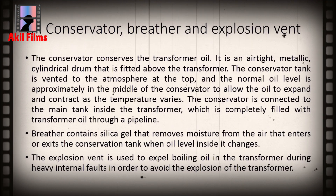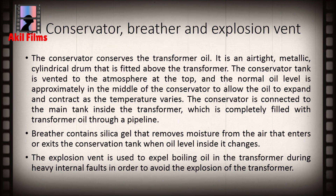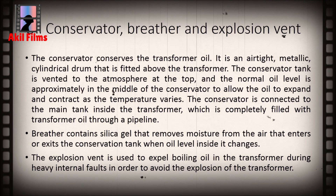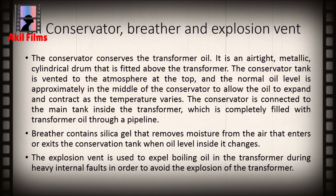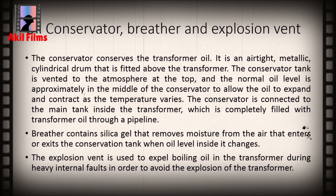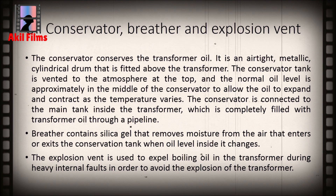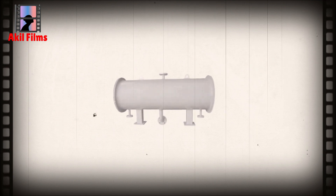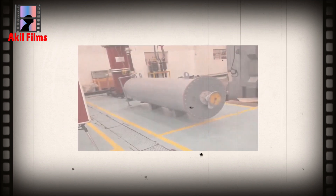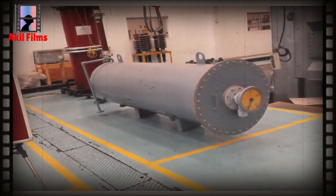The conservator conserves the transformer oil. It is an airtight, metallic, cylindrical drum that is fitted above the transformer. The conservator tank is vented to the atmosphere at the top, and the normal oil level is approximately in the middle of the conservator to allow the oil to expand and contract as the temperature varies. The conservator is connected to the main tank inside the transformer, which is completely filled with transformer oil through a pipeline.